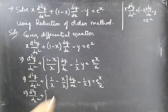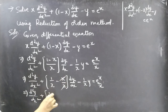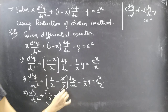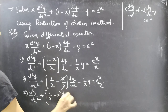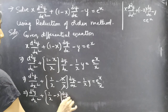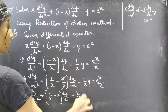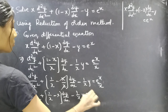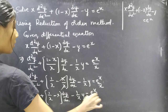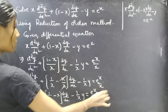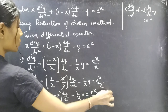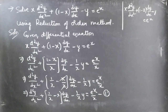Simplifying the middle term: (1 − x)/x splits into 1/x − 1, so the equation becomes d²y/dx² + (1/x − 1) · (dy/dx) − (1/x) · y = e^x / x, which we call equation number 1 in standard form.